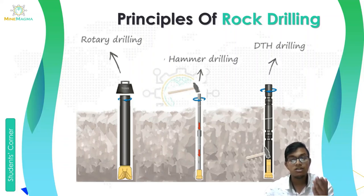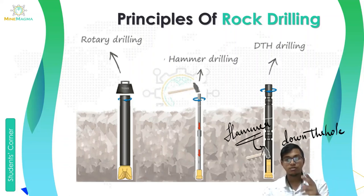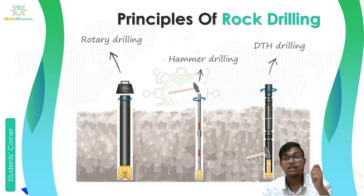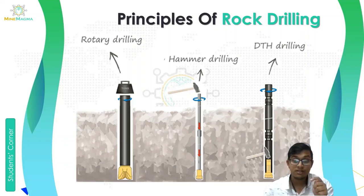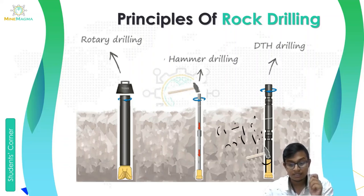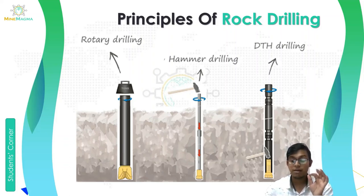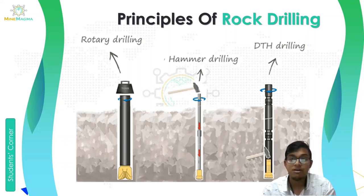The third type is DTH drilling, or down the hole drilling. The key difference from hammer drilling is that in hammer drilling the piston applies pressure on top of the drill rod via the shank adapter, whereas in DTH drilling the piston or hammer is literally down the hole, directly on top of the drill bit. These are powered by compressed air, and the piston punches the drill bit into the rock.